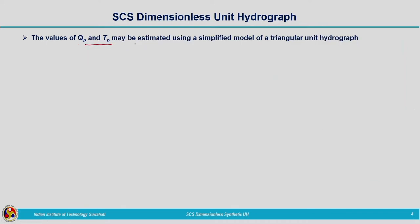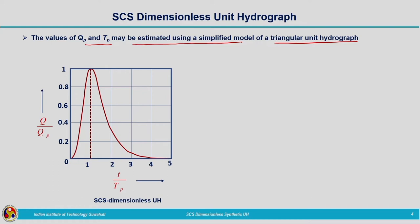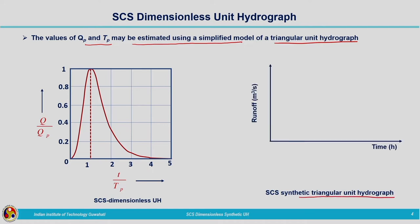The values of QP and TP may be estimated using a simplified model of a triangular unit hydrograph. In this method, the unit hydrograph is assumed to have a triangular shape — a time base with the peak represented by a single point — that can be drawn as a triangle. This SCS dimensionless unit hydrograph is approximated by means of a SCS synthetic triangular unit hydrograph.